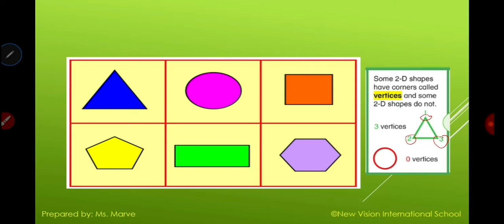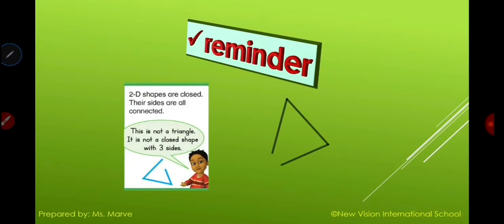Remember that some 2D shapes have corners called vertices and some do not — like the circle. So the shapes we have are: triangle, square, pentagon, rectangle, hexagon. The circle does not have vertices and it also does not have sides. The first thing you must always remember is that any shape that is not closed is not considered a 2D shape. Look at the picture — this is not a triangle because it is not a closed shape and it doesn't have three sides.